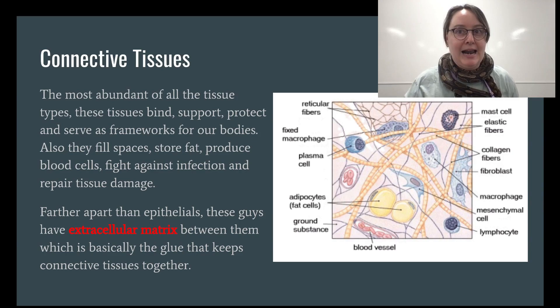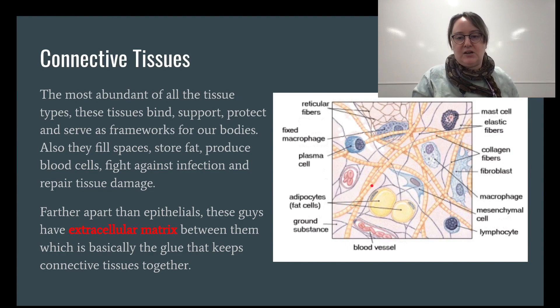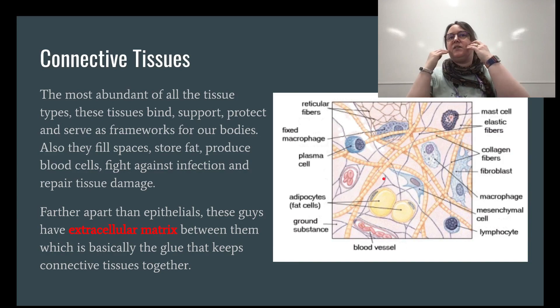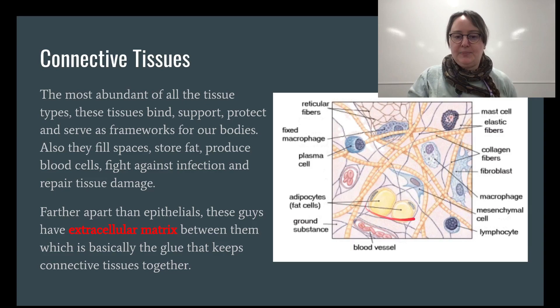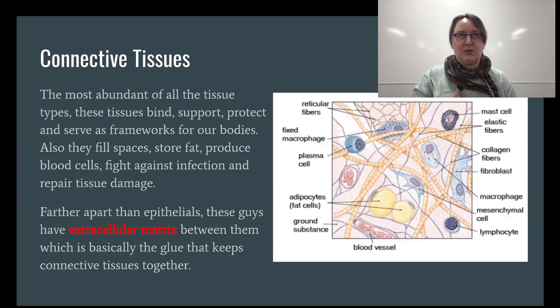Connective tissue cells are farther apart than epithelial cells. They have an extracellular matrix between them — basically the glue that holds everything together. In there you'll find white blood cells roaming around, mast cells, and collagen fibers. Collagen fibers give your skin its elasticity, which is why as you age your skin loses its spring. Adipose — fat — is also present everywhere, and fat actually keeps our organs lubricated and protected. You need body fat; you just don't need excess body fat.